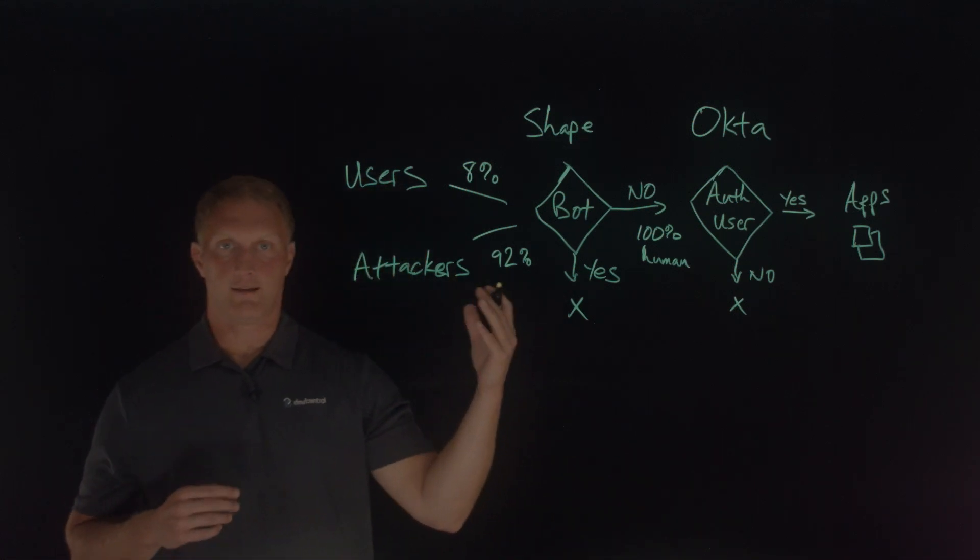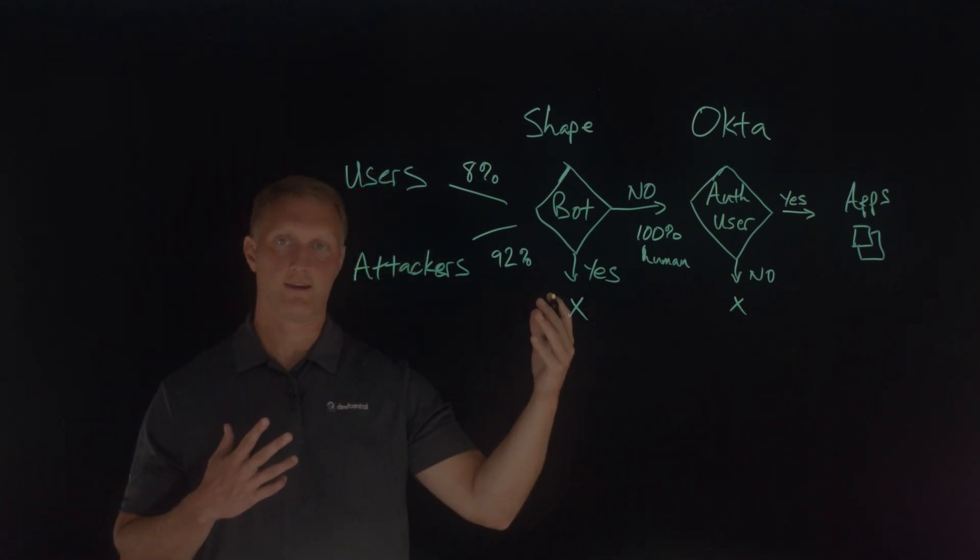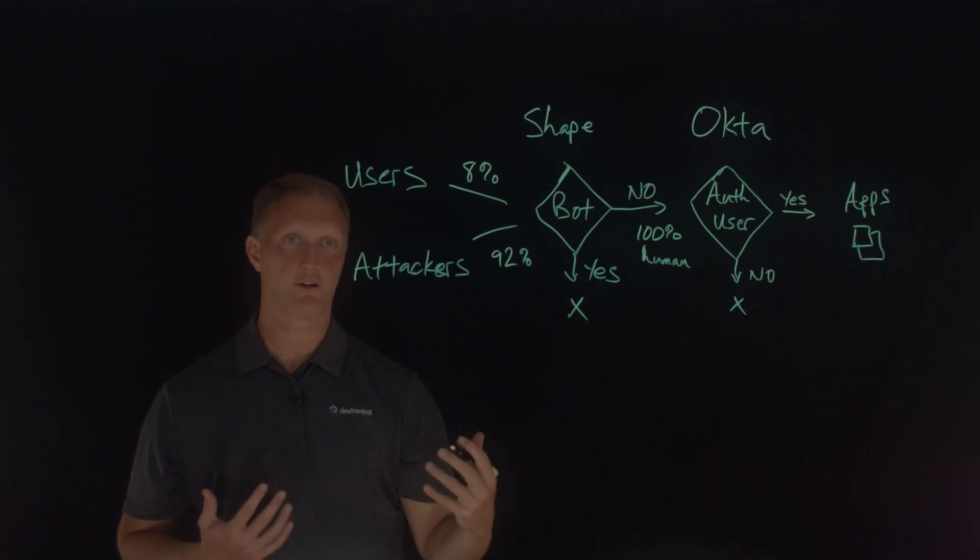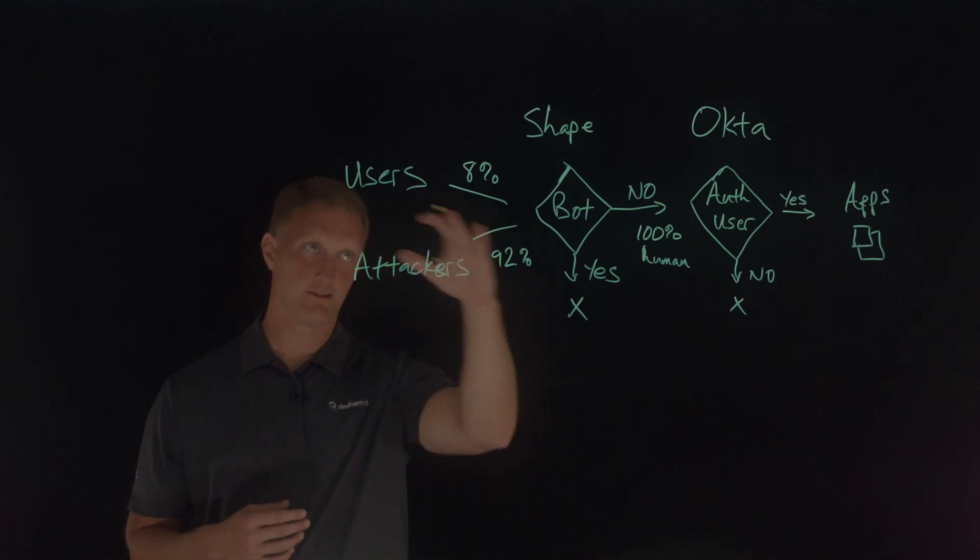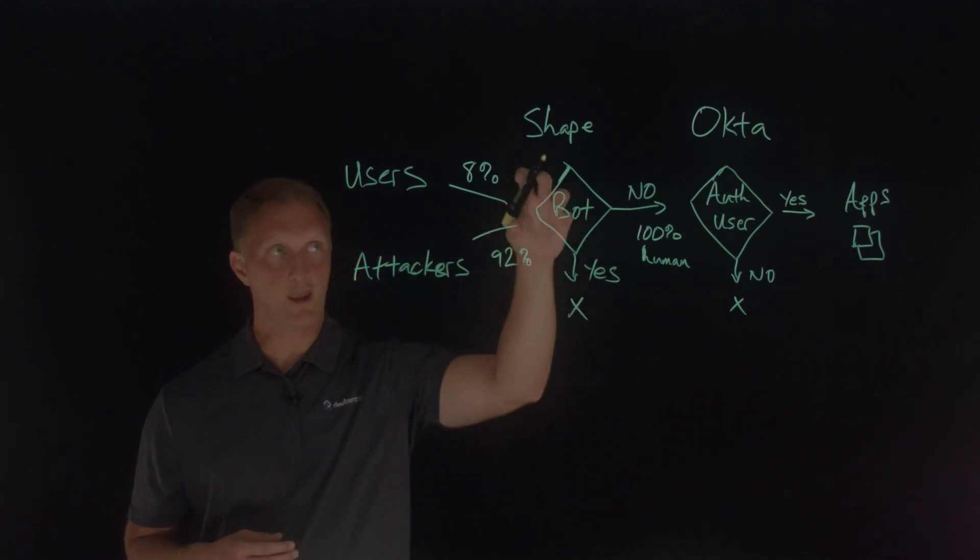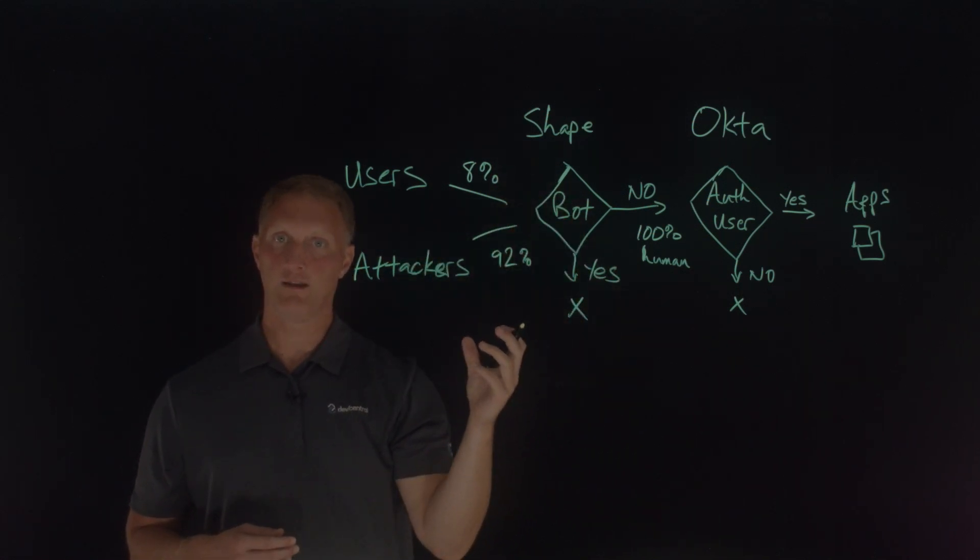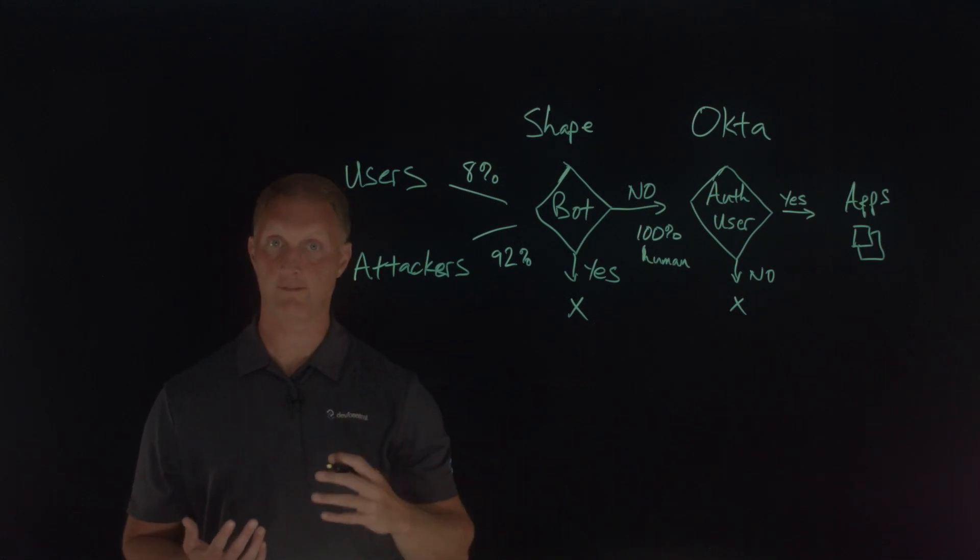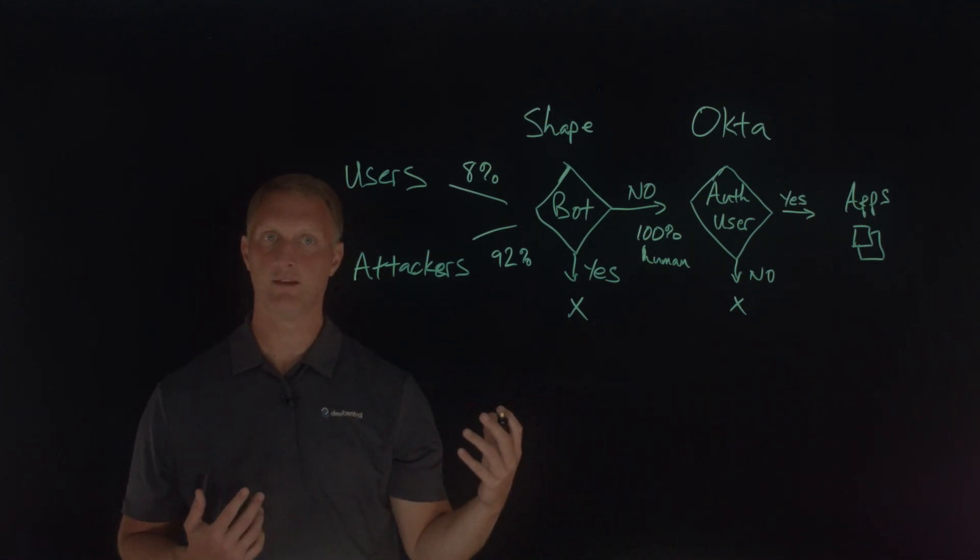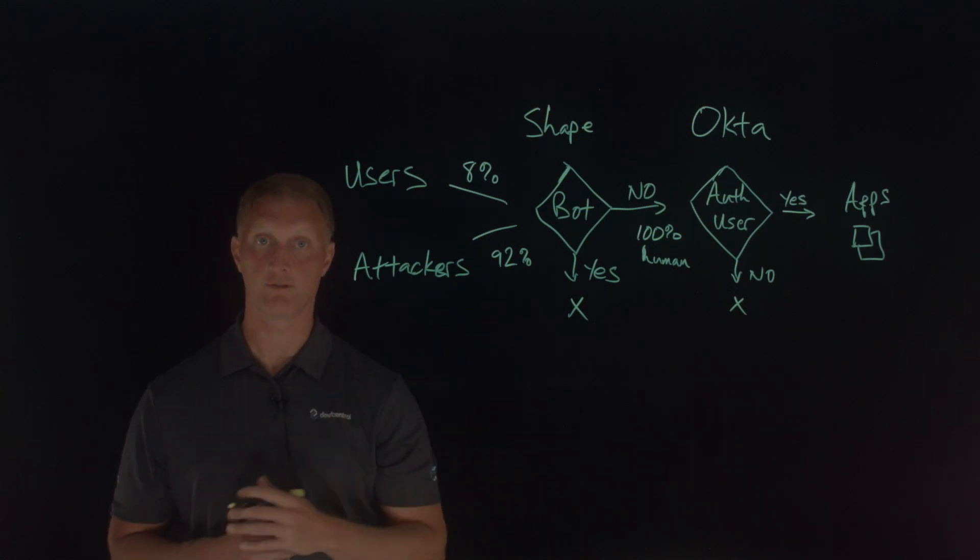I'll mention one last thing here. It's important to note that multi-factor authentication could cause significant friction for these legitimate users. And so Shape removes the malicious automated traffic without causing any kind of friction for these legitimate returning users.